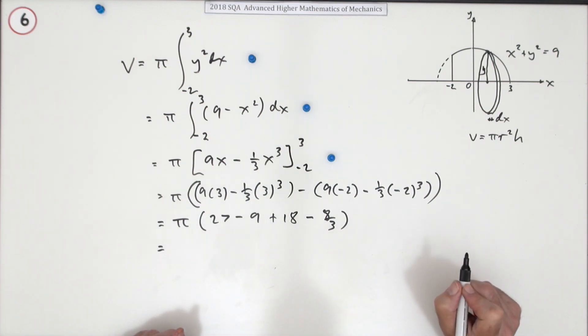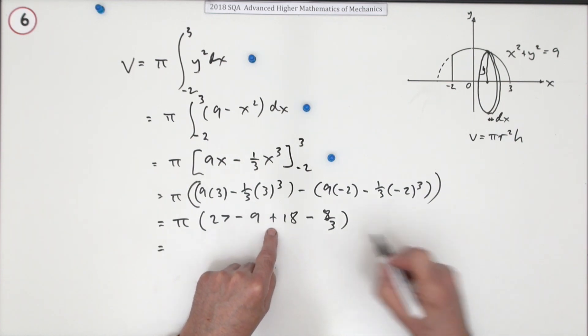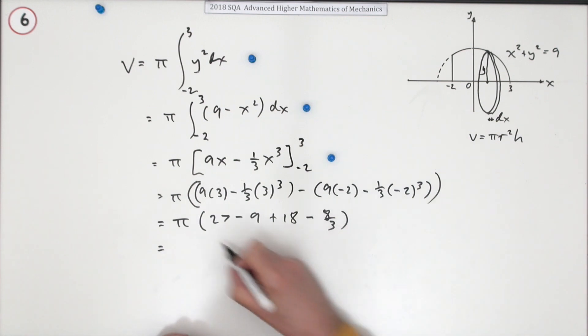Now it's just a case of tidying this lot up. So that's 27, 9, 36. But if I want to make it into thirds, that's 108. So it's 100. There's 100 thirds left. It's 100 pi upon 3 units cubed for the final answer.